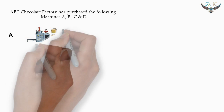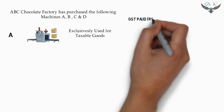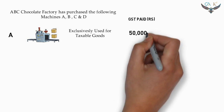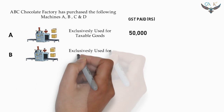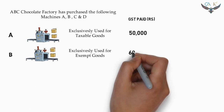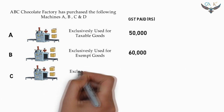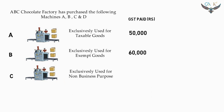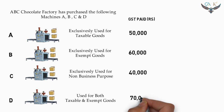Machine A is exclusively used for the purpose of taxable goods, and GST of Rs. 50,000 has been paid on its purchase. Machine B is exclusively used for making exempt goods, and the GST paid on purchasing machine B is Rs. 60,000. Machine C is exclusively used for non-business purposes, and GST of Rs. 40,000 has been paid. Finally, Machine D is used for both taxable as well as exempt goods, and a GST amount of Rs. 70,000 has been paid on purchasing machine D.